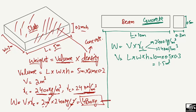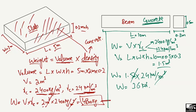I will solve here in kilonewtons per cubic meter. Weight equals volume times density: 1.5 cubic meters multiplied by 24 kilonewtons per cubic meter. The cubic meter units cancel out, giving us a weight of 36 kilonewtons.